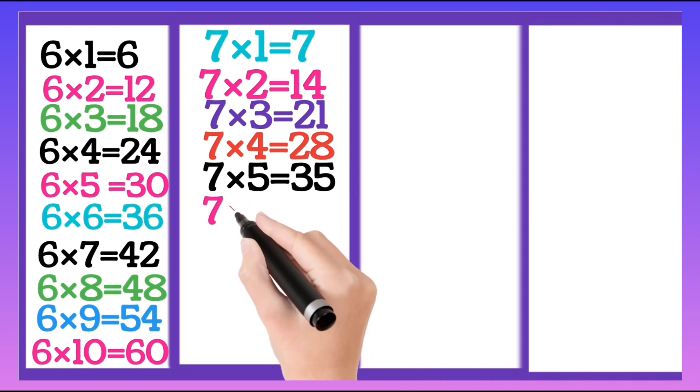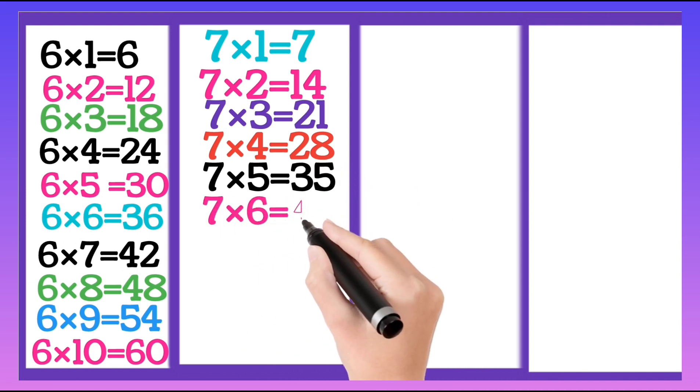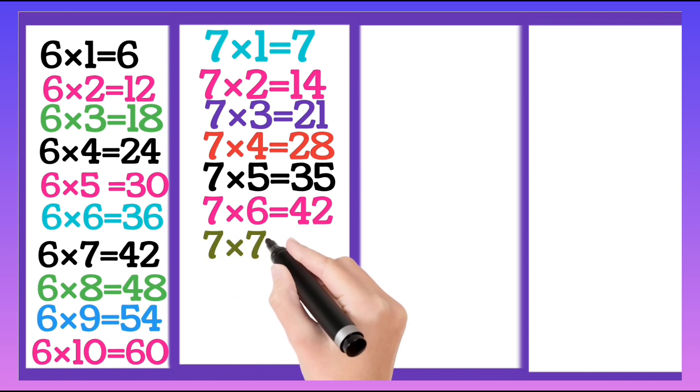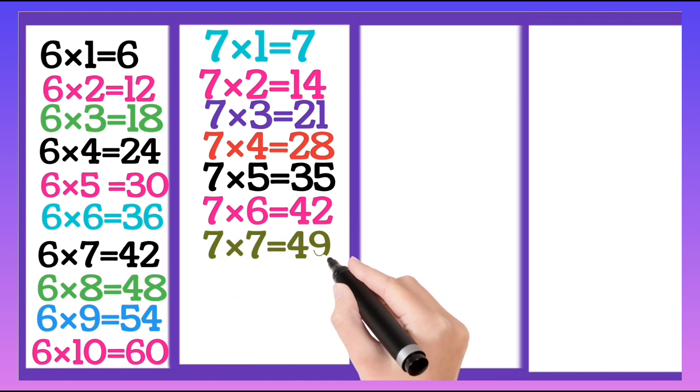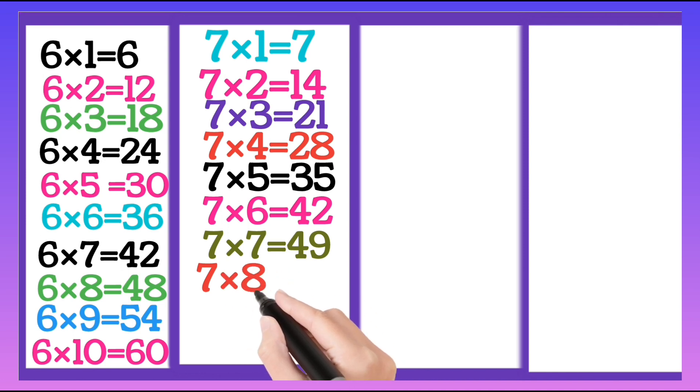7 fives are 35, 7 sixes are 42, 7 sevens are 49.